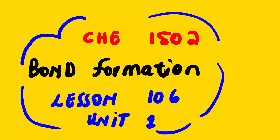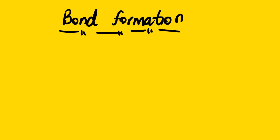Our lesson for today is Chemistry 1502. The topic for today is bond formation, lesson 106 under unit 1. Bond formation is one of the important concepts you should understand in organic chemistry, since you are dealing with different types of bonds. You should know different types of bond formation in order to understand bond breakage. In this lesson we'll be looking at how bonds are formed and the different types of bonds.